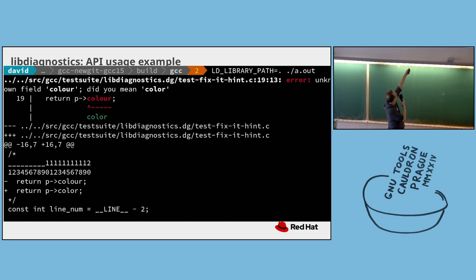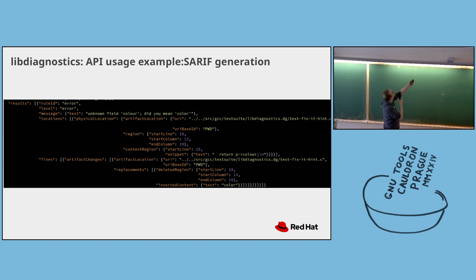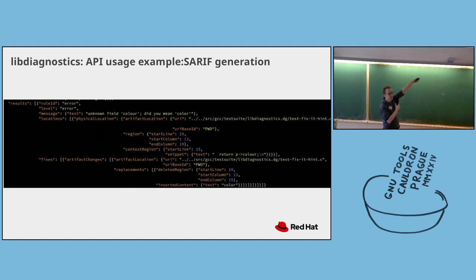This is the auto-generated patch for — there happens to be just one diagnostic in this toy program. So you can generate patches. And then you can generate SARIF. There's the error: unknown field 'color', do you mean 'colour'? It has a physical location. SARIF supports logical locations — like, is it in a particular function, a namespace, a class? And there's the fix-it hint expressed in machine-readable form.